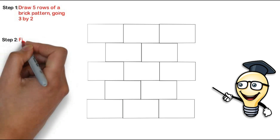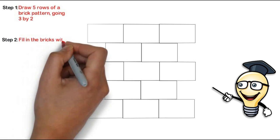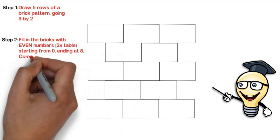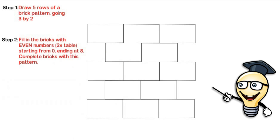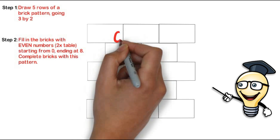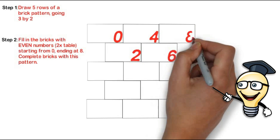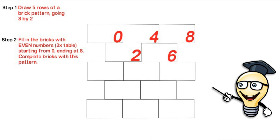Then what we do, step 2, is we fill in the bricks with even numbers or the 2x table starting from 0 and ending at 8. This is the general pattern for the 2x table. So we complete the bricks with this pattern. So we put 0 in the first brick, then 2, then 4, then 6, then 8.